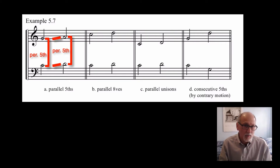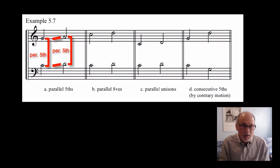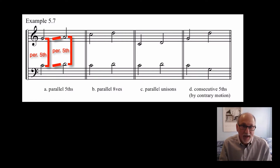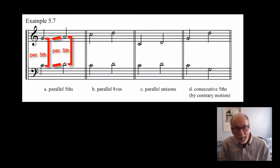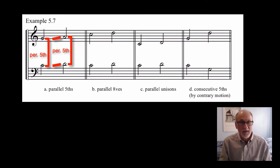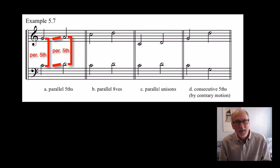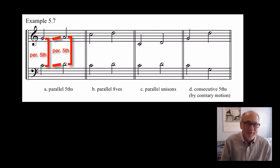You might ask yourself, why is this considered a mistake? It really has to do with the sound — the nature of the sound of the fifth, which is a very hollow sound, which is closely aligned with the overtone series. And I think the composers just felt that if you were going to write an interval of a fifth followed by another interval of a fifth in parallel motion, it really doesn't sound like they're separate voices. They sound too connected, almost like one is an overtone of the other.